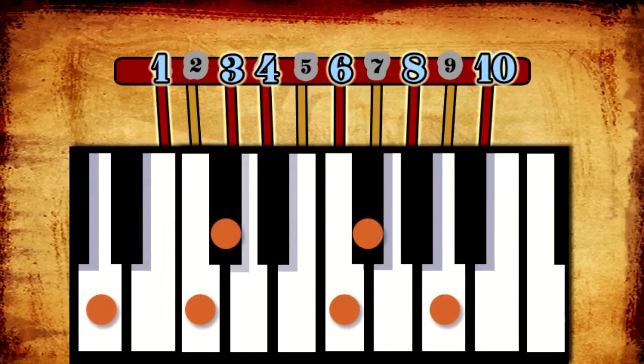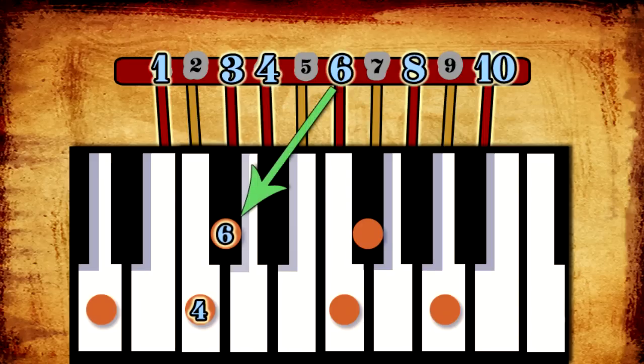String number 4 is tuned to the first scale tone, in this case C. String number 6 is tuned to the second scale tone, in this case C-sharp.